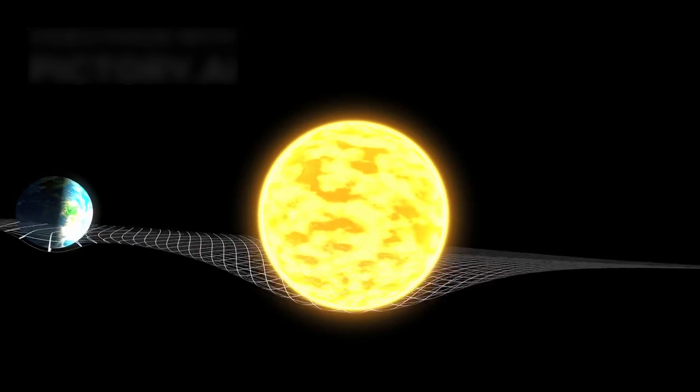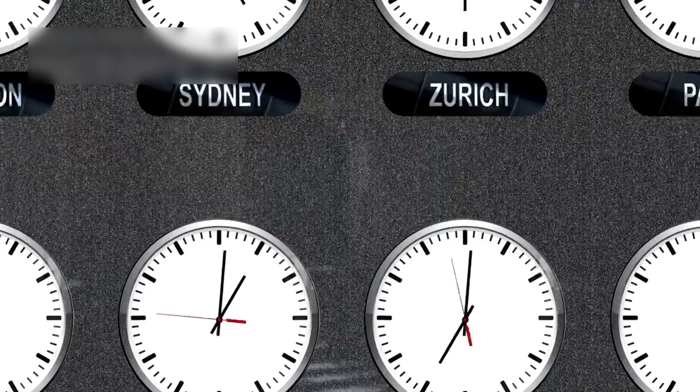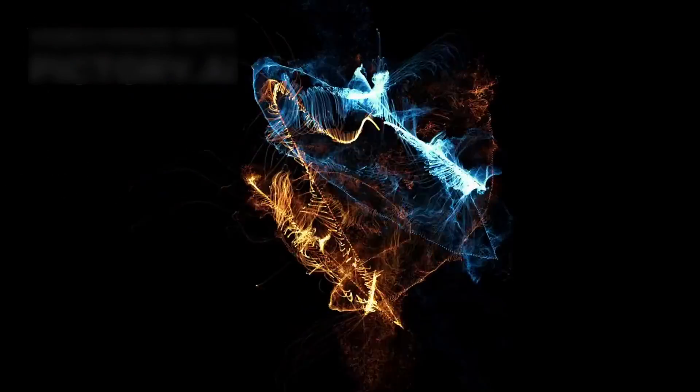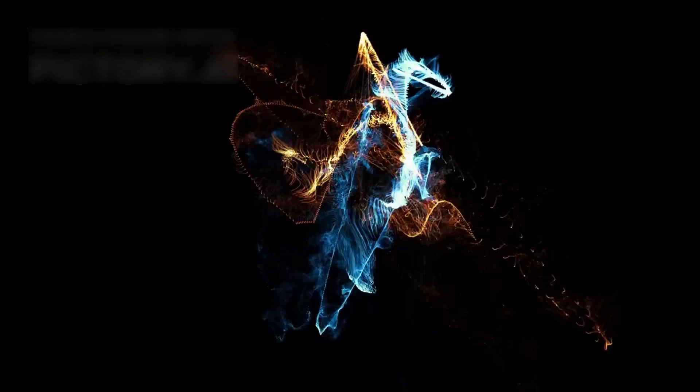Some physicists now think the issue isn't space, it's time. Time may not be flowing equally across the cosmos. Different areas may have different clocks ticking due to matter density, vacuum chaos, or multidimensional interactions.